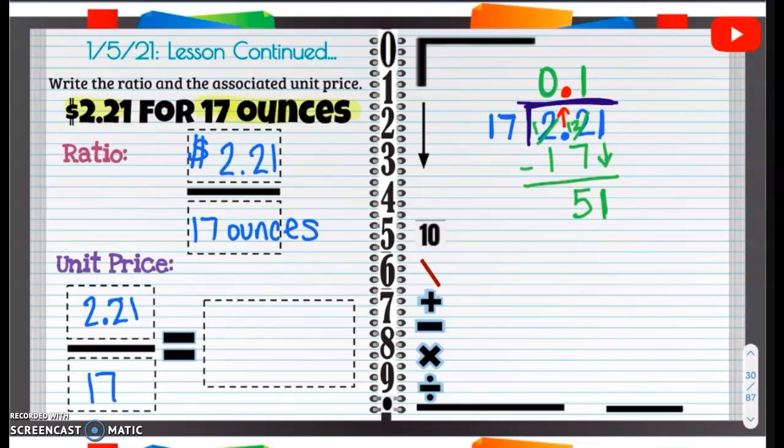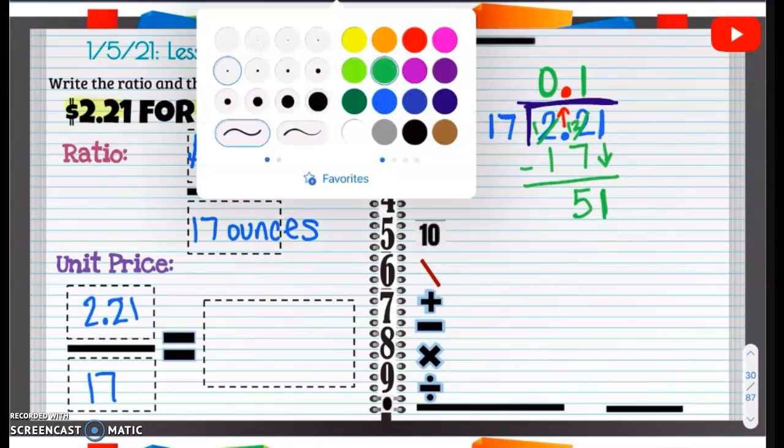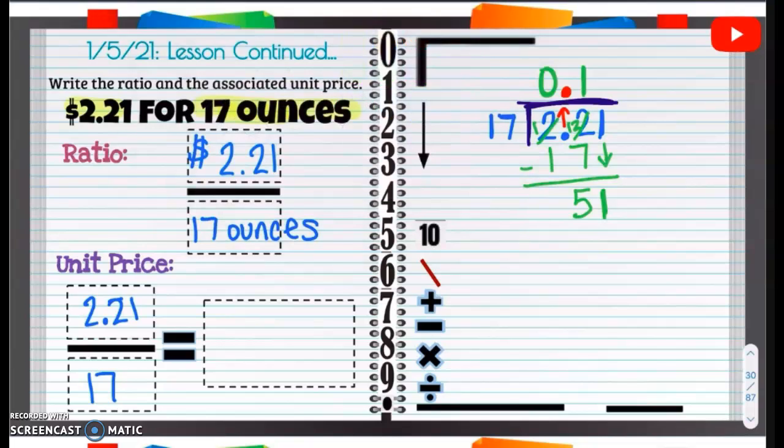Can 17 go into 51? Well, it can, yes. But how many times? We're not sure, so let's show our work on the side and see how many times it can go in. I know 17 times 2 is 35 or 34. Let's try 17 times 3, see what that gives us. 3 times 7 is going to be 21. 3 times 1 is 3 plus 2 is going to be 5. Look at that.